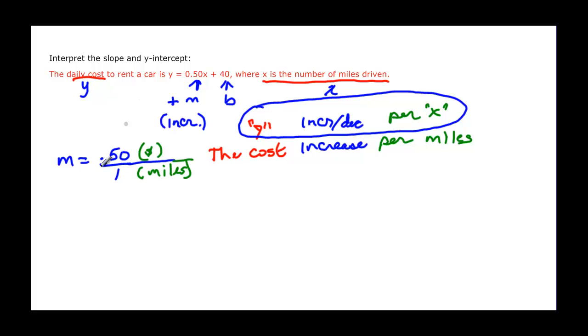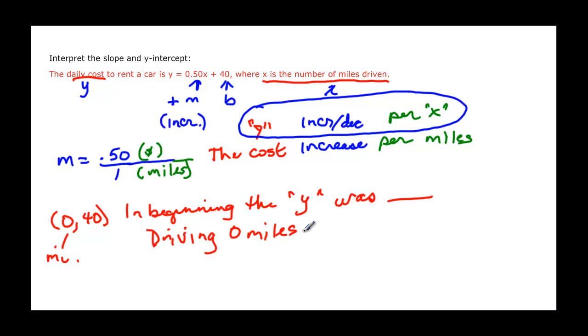If we talk about y-intercept, it's zero, and we found the b over here to be forty. Beginning, in the beginning the y was, and then you give whatever it is. So when we talk about beginning here, it would be zero, this is miles. Driving zero miles, that's the beginning. The cost, that's the y, to rent is, and what is it? This is our b again, and it's in dollars, so it would be forty dollars.